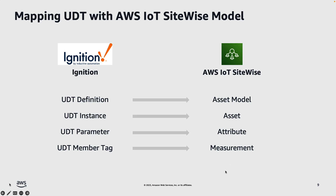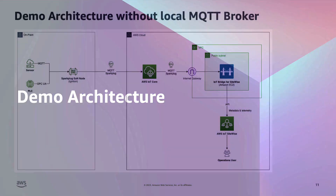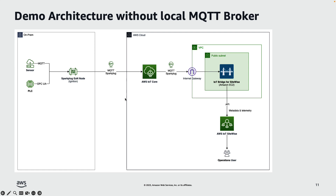So we talked about the Sparkplug specification and the IoT Bridge marketplace product. Now let us do a demo walkthrough to understand the end-to-end flow. For the demo, let us take an industrial manufacturing facility with devices like PLCs and smart sensors. We'll have a Sparkplug edge-of-network node that connects to these devices and publishes MQTT Sparkplug messages to a cloud broker, which is AWS IoT Core. The IoT Bridge for SiteWise marketplace product then consumes these messages and ingests data into AWS IoT SiteWise, whether it's metadata like model information or telemetry.